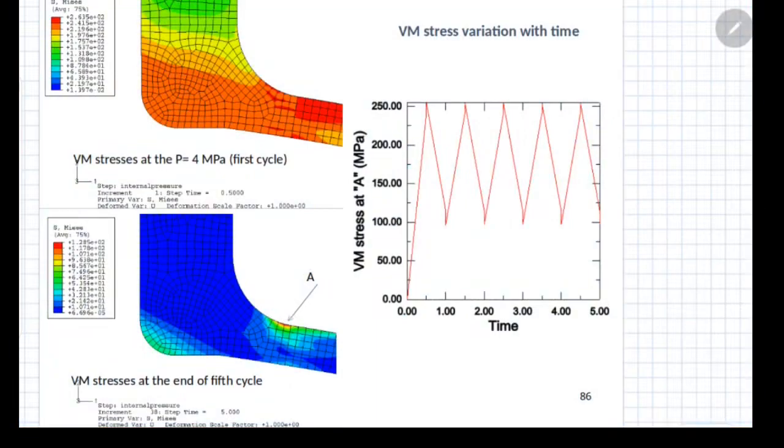The same nozzle to head junction what we have seen previously, when it is subjected to first cycle, the first cycle corresponds to the pressure from 0 to the maximum pressure, you will get certain stress distribution. When you go back to the second cycle, you will get another stress distribution and so on.